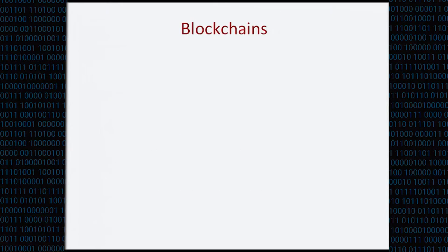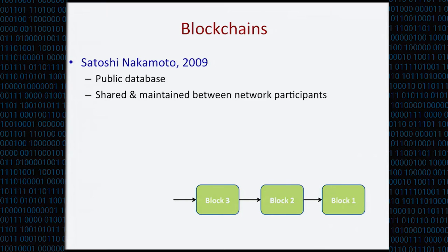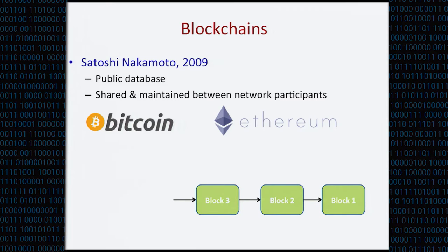So first of all, what is blockchain? Blockchain was first introduced back in 2009 by an author with a pseudonym Satoshi Nakamoto. You can view blockchain as a public database which has a special data structure — one block after another. This public database is shared and maintained by all the network participants or network nodes. Since its introduction, blockchain has been used in many popular cryptocurrencies like Bitcoin and Ethereum.